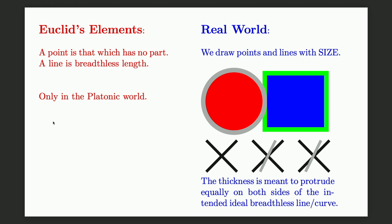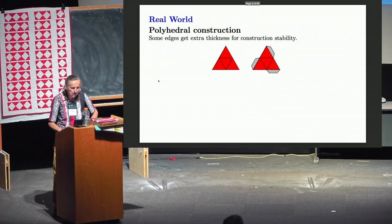That circle and that square are meeting precisely — their boundaries overlap. At the bottom I have two lines intersecting, and I want the third line to go through the intersection in the middle. That's done correctly on the right side — well, is that correct up to our vision? Maybe it's okay, but it's probably not. So we have this thickness in the real world when we're drawing things.